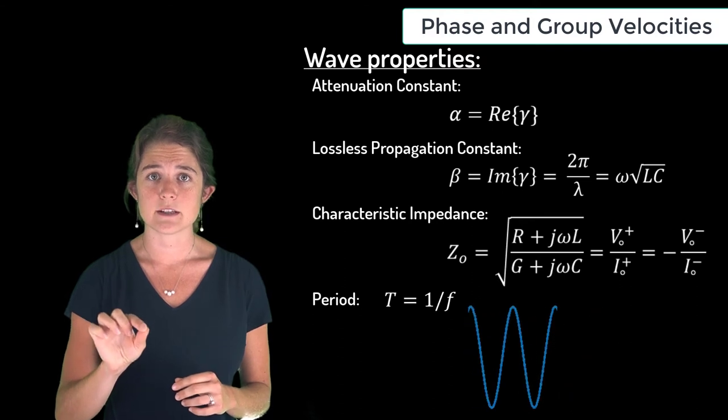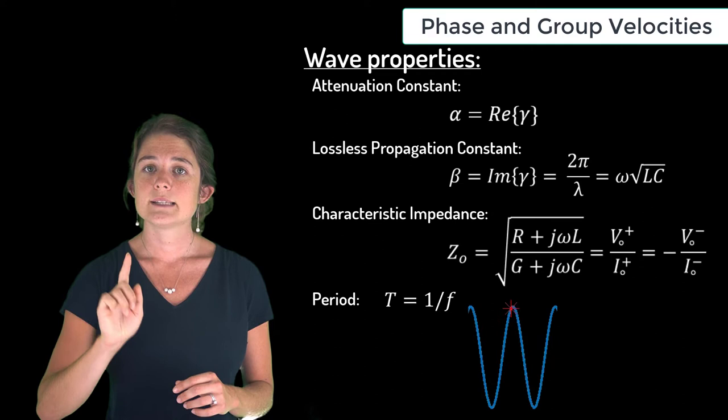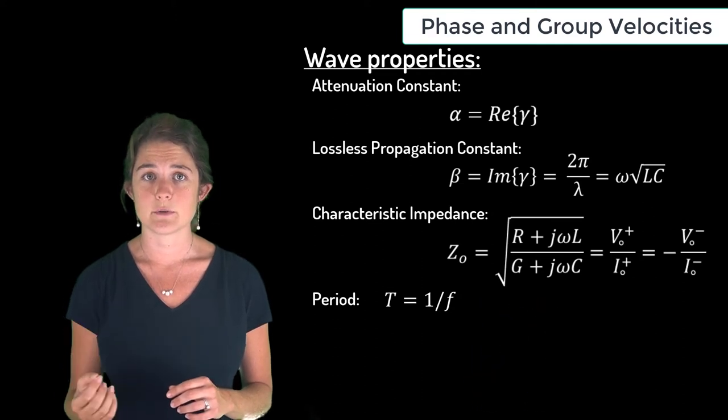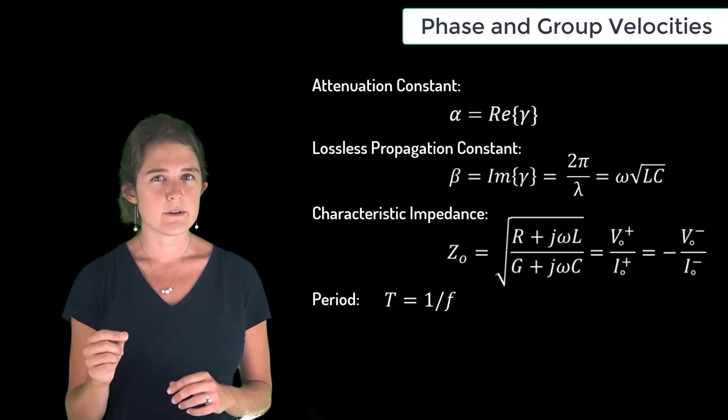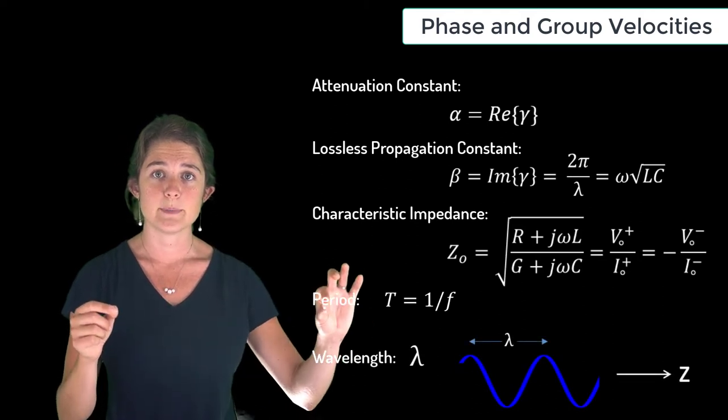A wave also has a temporal period T, which is the time it takes a specific location in the line to experience an entire cycle of the wave. T is equal to 1 over the frequency. And a wave has a wavelength lambda, which is the spatial separation between two peaks of the wave.